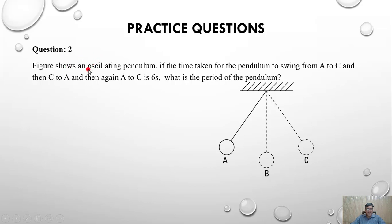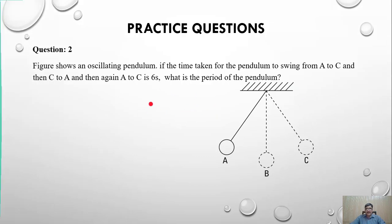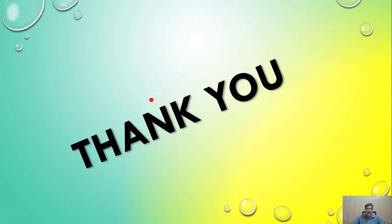Practice question 2: The figure is given again. If the time taken for the pendulum to swing from A to C, then C to A (one complete oscillation), and then again A to C is 6 seconds — calculate the period of the pendulum. This is an exercise for you to solve. That's it for today's lesson. Thank you so much. If you haven't subscribed to the channel, please do so and don't forget to hit the like button.